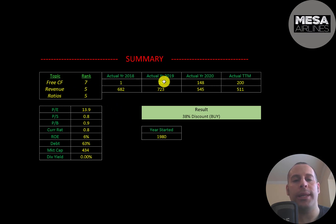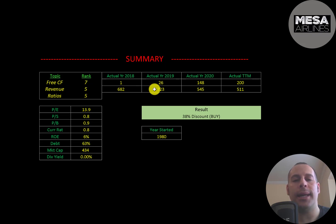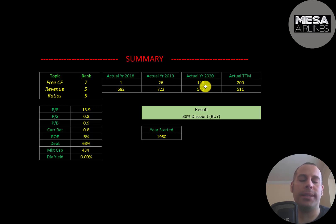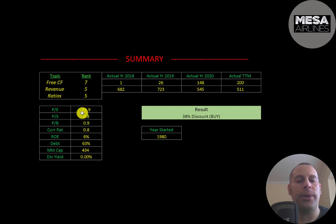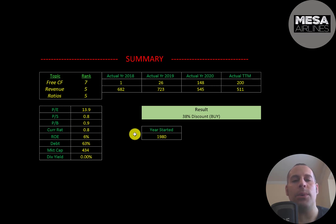I ranked their free cash flow seven out of ten because they're growing it really nicely. I ranked their revenue five out of ten — it did peak in 2019 and dropped a lot, but every airline dropped a lot in 2020, and not just airlines, most businesses dropped a lot in 2020. I give their ratios five out of ten — they do have good price multiples but a pretty weak current ratio, a fairly low ROE, and they do have a lot of debt.